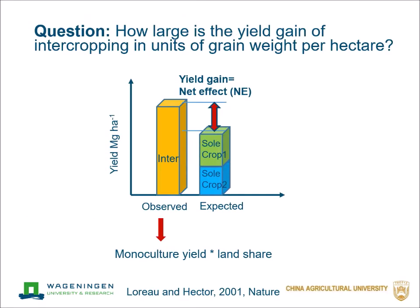Our question is: how large is the yield gain of intercropping in units of grain weight per hectare? We want to use the net effect to reflect the yield gain of intercropping. The net effect is often used in biodiversity experiments. As shown in this figure, the net effect is the yield gain — the difference between the observed yield and the expected yield. The expected yield is calculated as the monoculture yield multiplied by the land share of each species in intercropping.